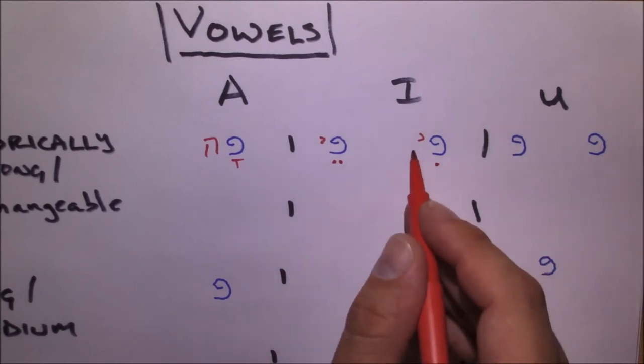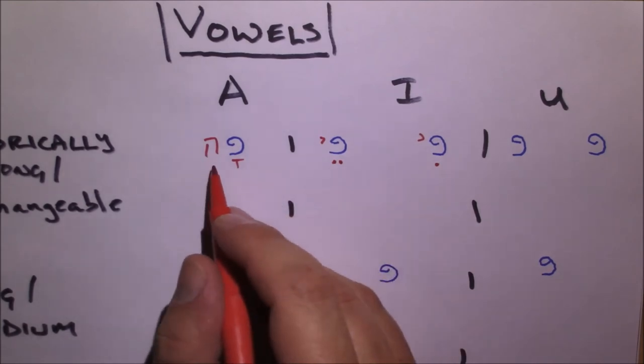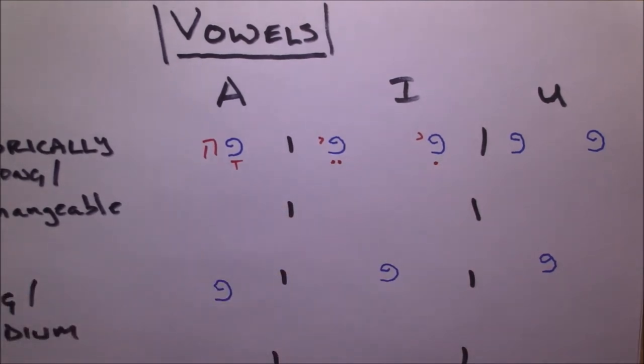All right. Now notice there's no vowel underneath these vowel carriers. They will not take vowels underneath them, rather just before. That's one of the ways that you can tell that they are a vowel carrier or historically long vowel and not a consonant.